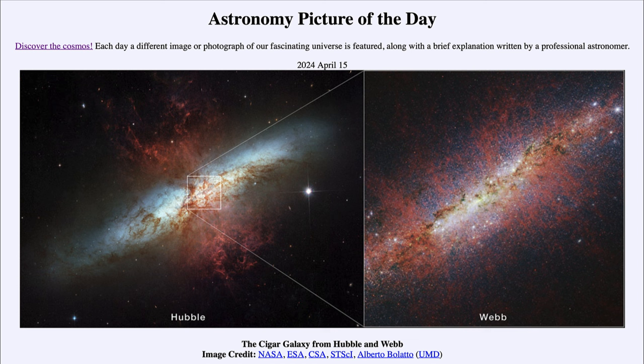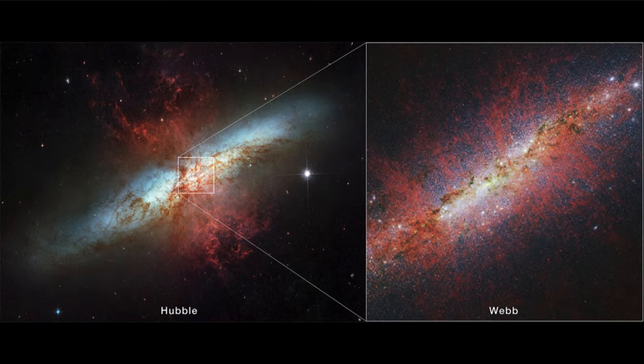Here we see two pictures of what is known as the Cigar Galaxy, also known as M82. This is an example of what is called a starburst galaxy — a galaxy undergoing a burst of star formation.